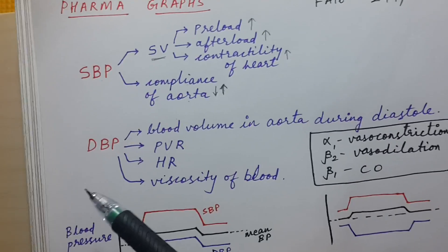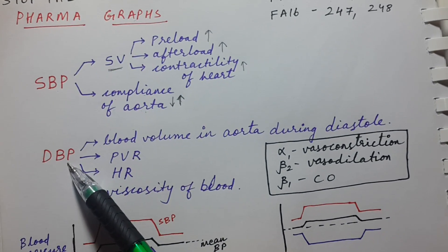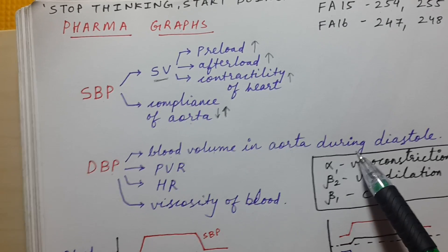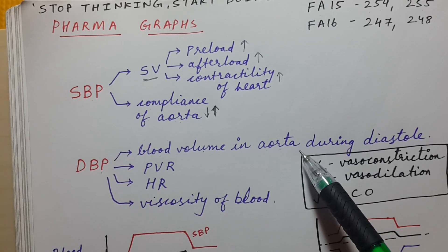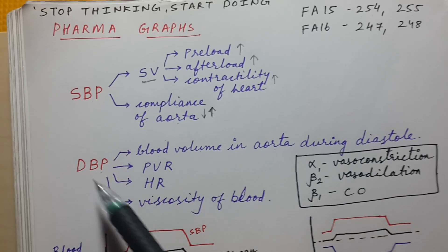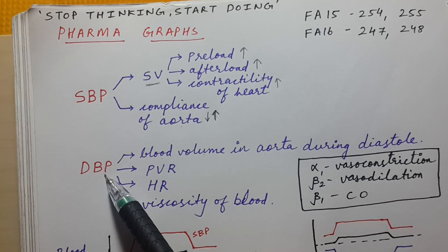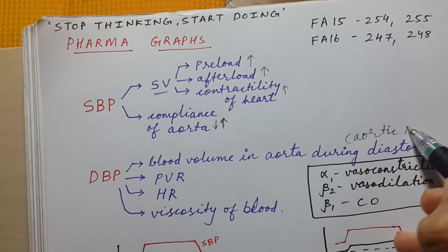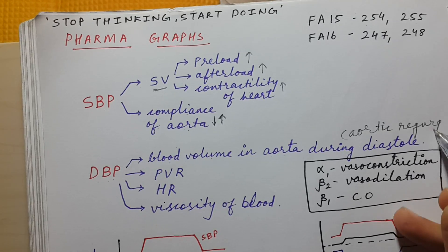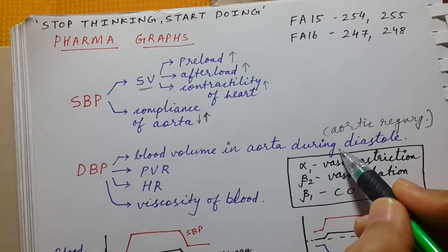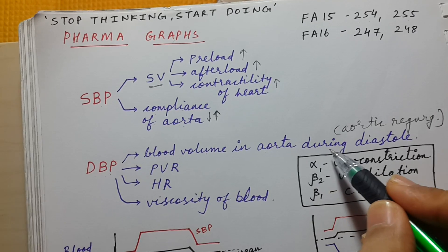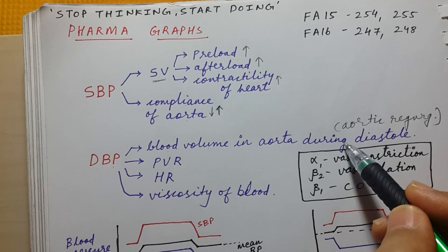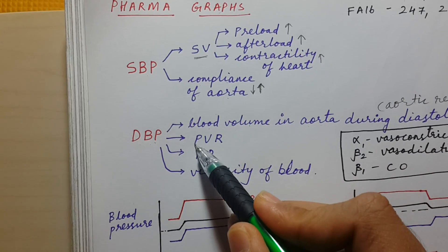The factors that affect diastolic blood pressure — first, the main thing is blood volume in the aorta during diastole. If there is less blood volume in the aorta during diastole, that will decrease diastolic blood pressure. A classic example is aortic regurgitation, where most of the blood in the aorta goes back into the left ventricle during diastole, decreasing diastolic blood pressure.